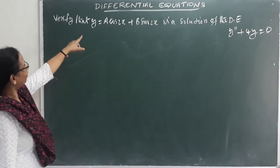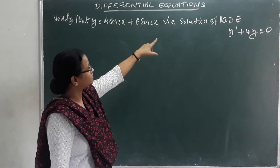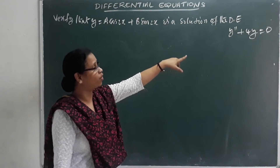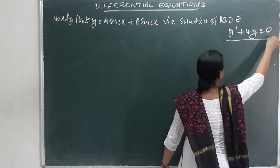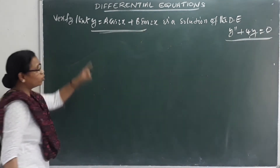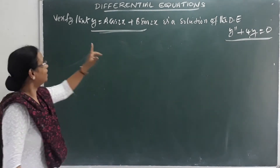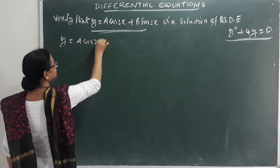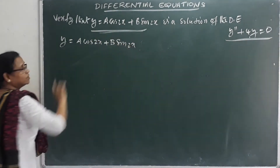Second problem: Verify that y = a·cos2x + b·sin2x is a solution of the differential equation y'' + 4y = 0. Let's check this.